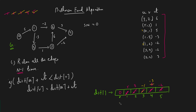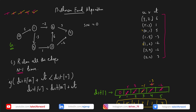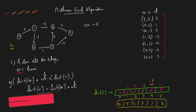In this way you will do the third, fourth, and fifth relaxations. At the end of all n−1 relaxations you will get the final distance array: [0, 5, 3, −1, −3, −2]. If you relax n−1 times, you are guaranteed to get the correct answer. The reason why n−1 will be explained in the intuition.